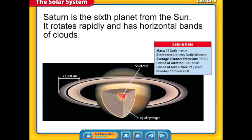Let's move on now to the next note, the planet Saturn. Saturn is the sixth planet from the sun. It rotates very rapidly and has horizontal bands. You can see that it is very massive and 95 Earth masses. The diameter is 9.4 times the Earth's diameter and its average distance is 9.6 AUs. Period of rotation is 10.6 hours. So it spins very quickly also. And its revolution time is 29.7 years, which is almost 30 years for it to go around the sun. It has more than 60 moons.